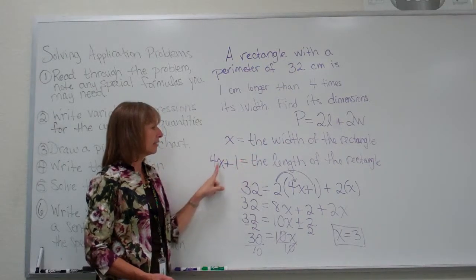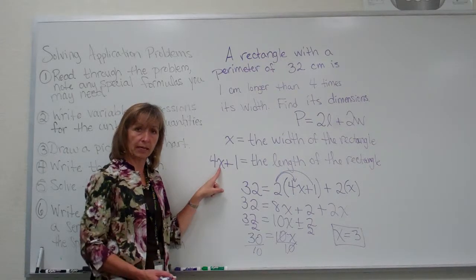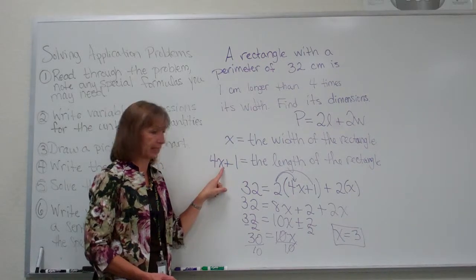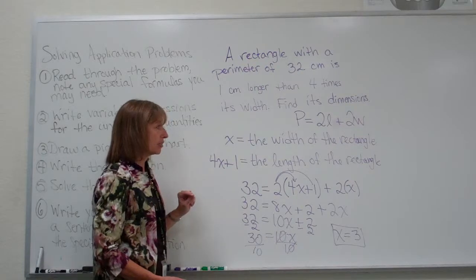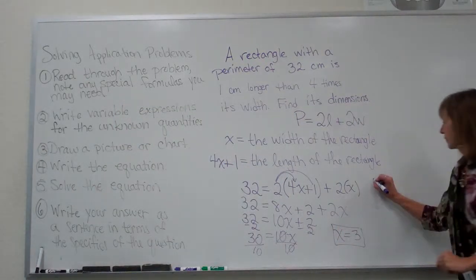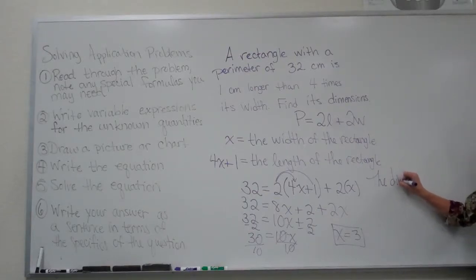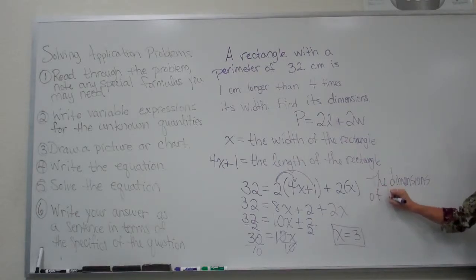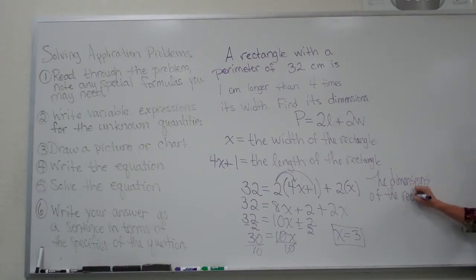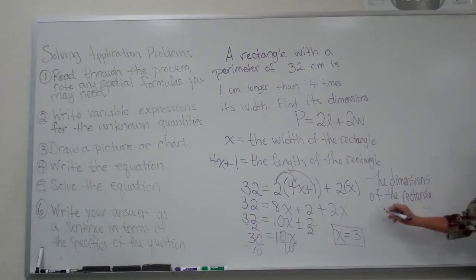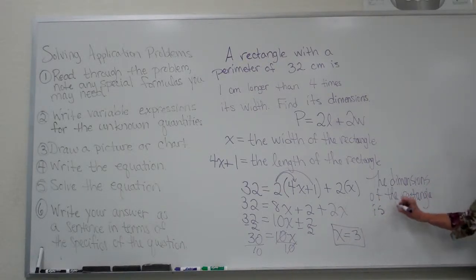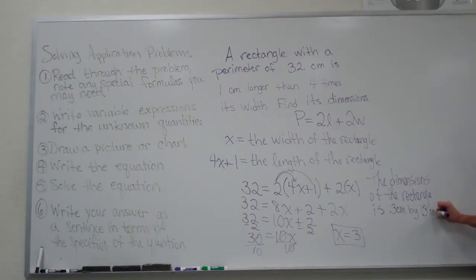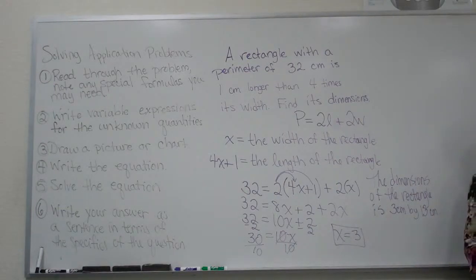And then our length of our rectangle, we take our width 3, multiply it by 4, that gives us 12, and then add 1. So that would be a length of 13. So we would get that the dimensions of our rectangle is 3 centimeters by 13 centimeters. To report our answer in sentence form.